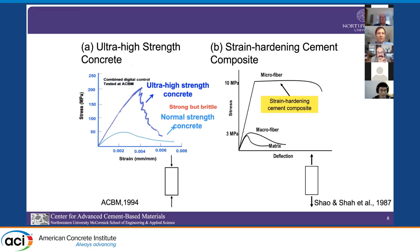It is very important especially for durability that you have sequential multiple cracking until crack localization, so that crack widths are smaller. Historically there are two separate developments: one is ultra-high strength concrete, where the emphasis was on achieving very high compressive strength, and the other is strain hardening cement composites — RILEM has a committee on that — focused on obtaining strain hardening response with sequential multiple cracking.